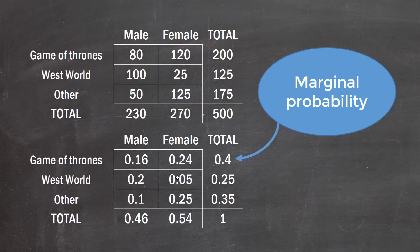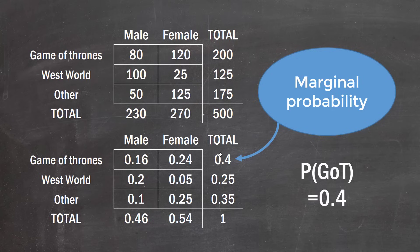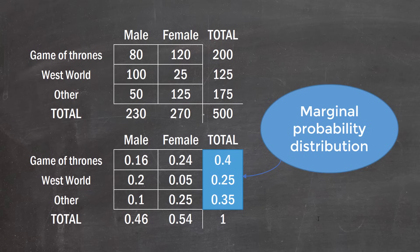We can also calculate what's called the marginal probability — called as such because it's in the margins. Another term for this is the simple probability. The value 0.4 here refers to the raw probability of someone liking Game of Thrones, which is simply the sum of both the male and female joint probabilities for that show.